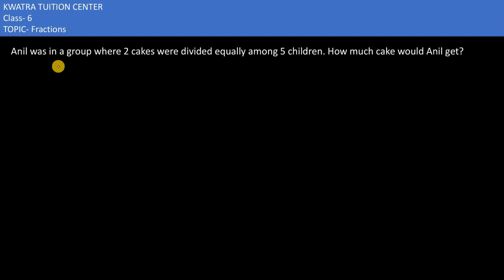Now here in this case it says Anil was in a group where 2 cakes were divided equally among 5 children. How much cake would Anil get?